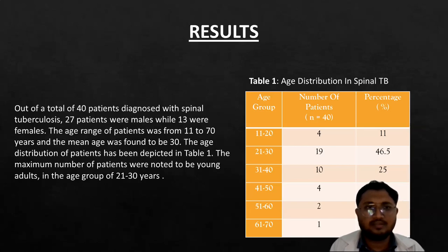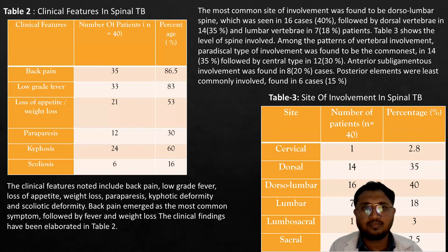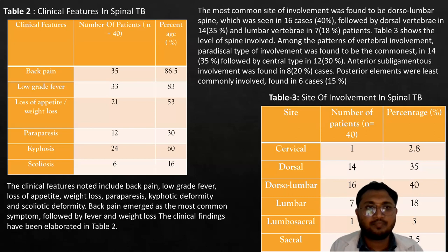On calculating the results, we found that out of 40 patients diagnosed with spinal tuberculosis, 27 patients were male while 13 were female. The age range was from 11 to 70 years and the mean age was 30. The most common clinical features observed were back pain, low-grade fever, and loss of appetite. The least common features were kyphosis, paraparesis, and scoliosis. The most common site of involvement was the dorsolumbar spine, followed by dorsal vertebrae and then lumbar vertebrae.